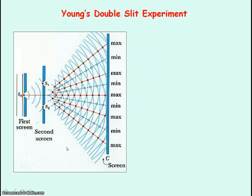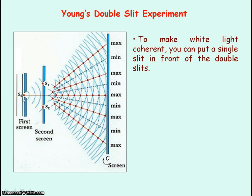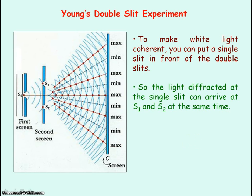In 1801, Thomas Young was the first person to measure the wavelength of light by using the interference of light from two slits. However, at the time there was no laser light, so he used a light source which he passed through a single slit, so that sufficient diffraction occurred and the light from the single slit passed through the two double slits at the same time, arriving with a fixed phase relationship and therefore being coherent.